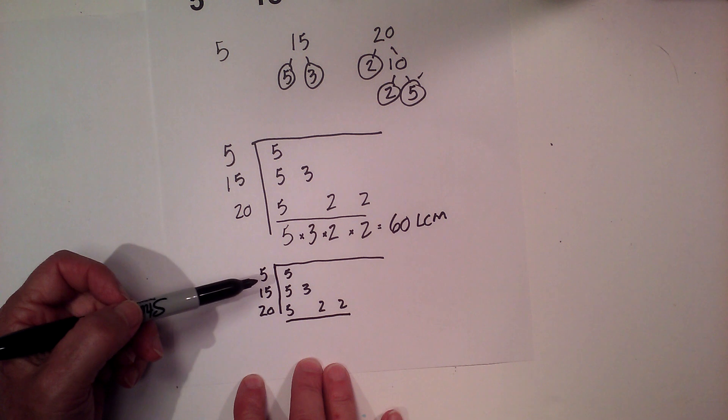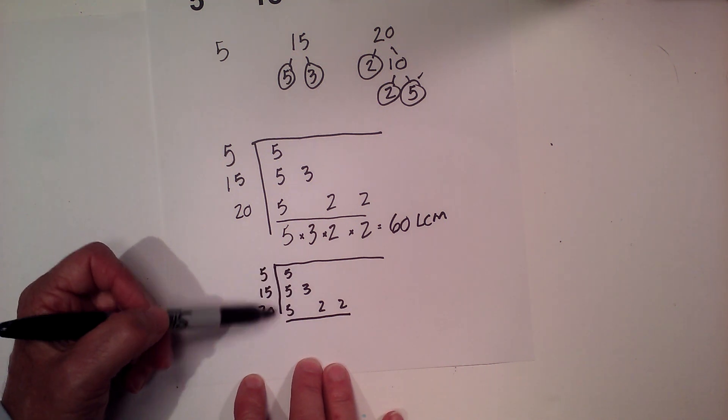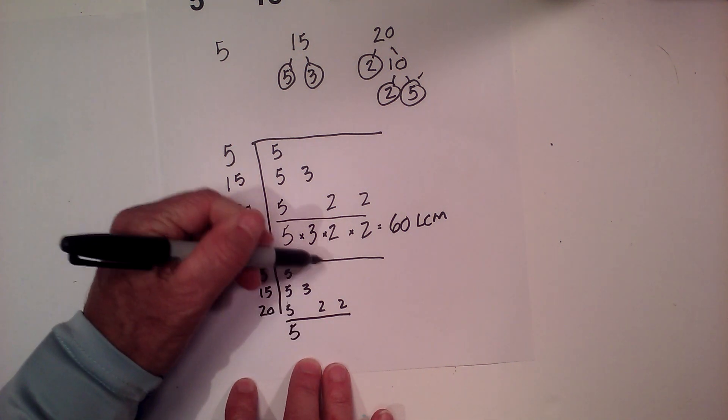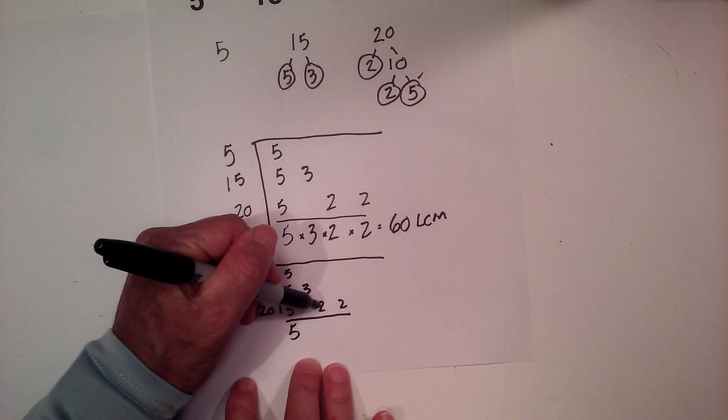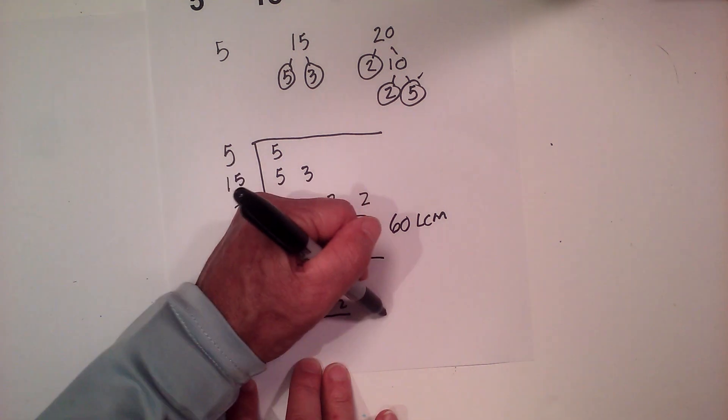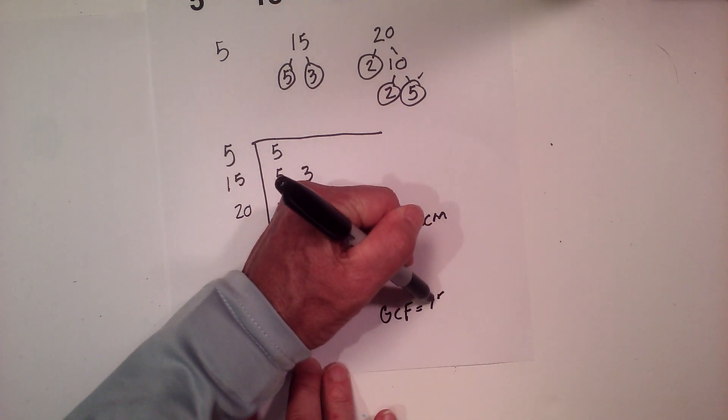Since you have 3 numbers - 5, 15, and 20 - you will only use triplets. And so the only triplet I have is 5. I don't have a triplet of the 3, I don't have a triplet of the 2, or the other 2. So the GCF equals 5.